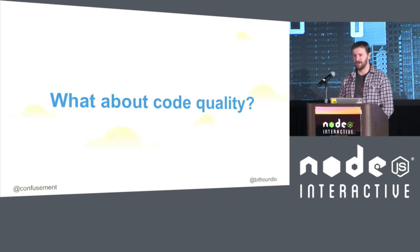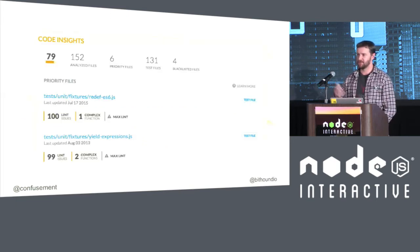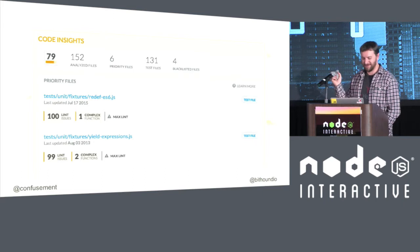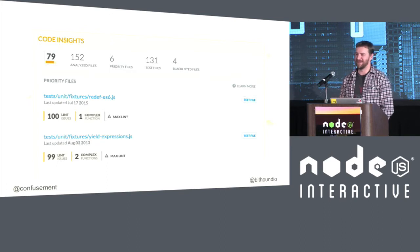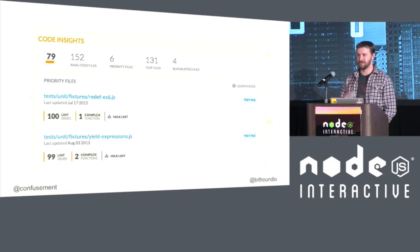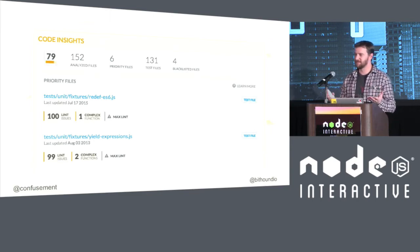What about code quality? Obviously at Bithound we are huge on code quality and analysis. But should we take that into account when selecting a particular NPM package? JSHint is a linting framework — and this isn't to dig at them — but it dawned on me that JSHint doesn't have an ES6 linting config for their test fixtures. I don't know if that's irony, but things like that — are they indicators that projects may not be fully managed to the best standards?